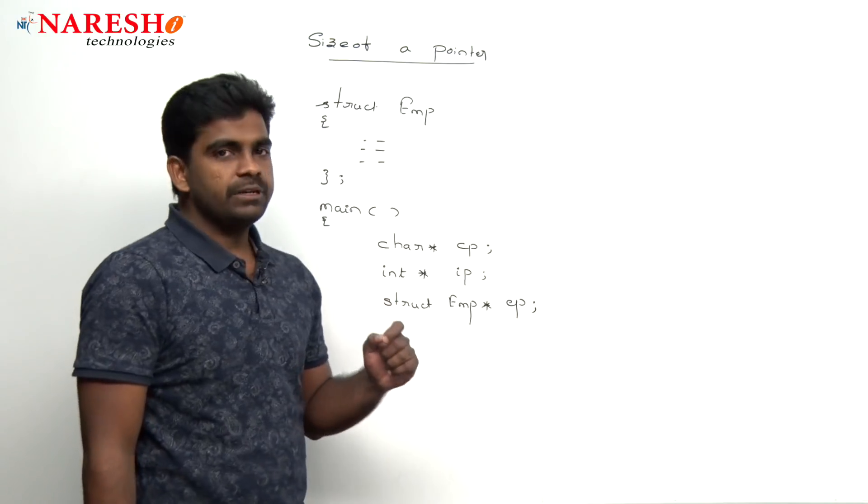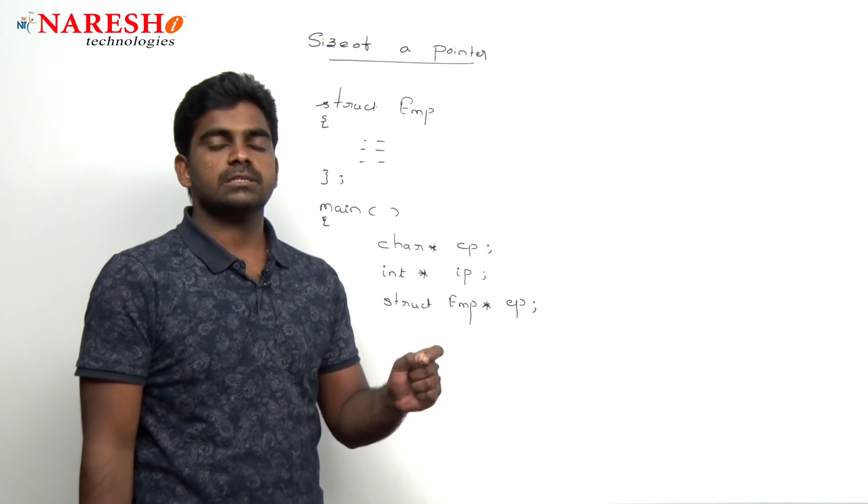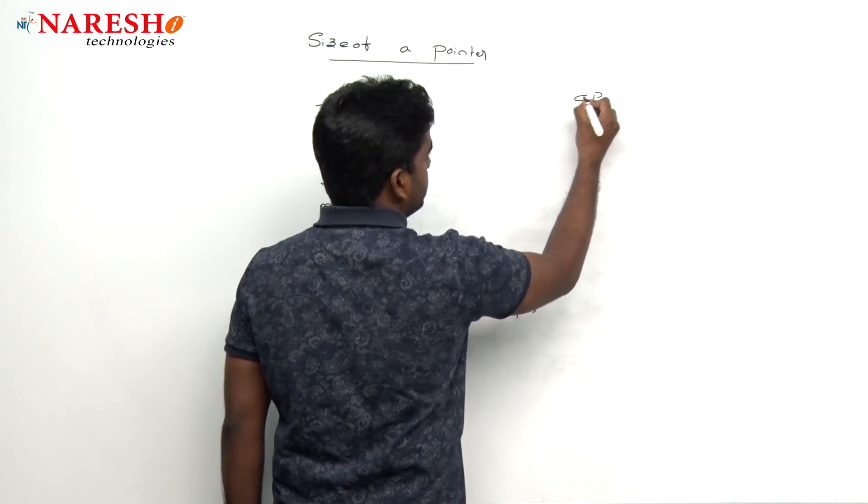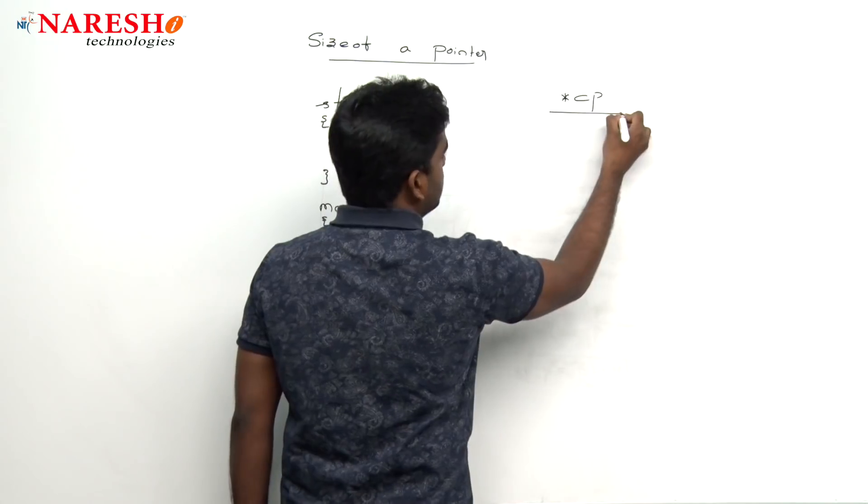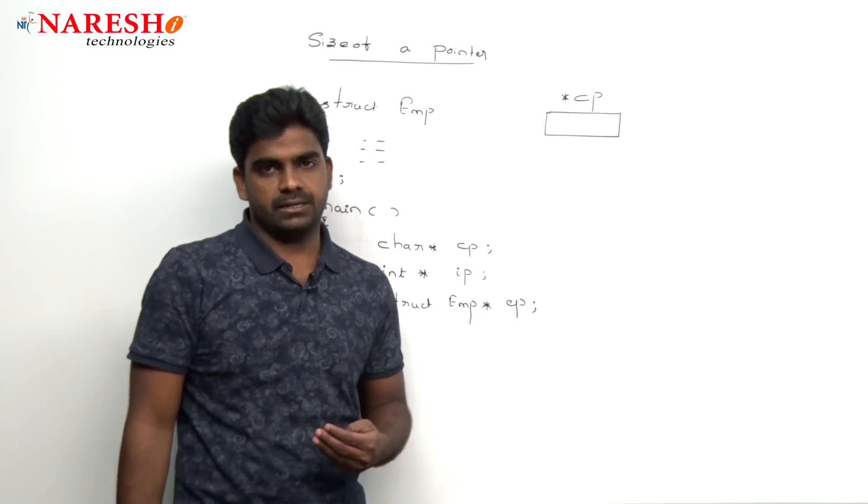Now, how much memory will be allocated? See the pointer variable always stores address. So cp is a pointer here. Address means what? It can be either 2 bytes or 4 bytes depends on the compiler.